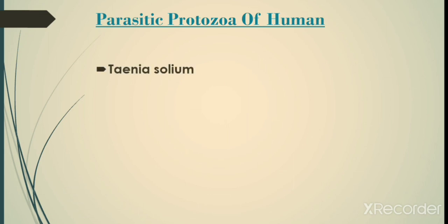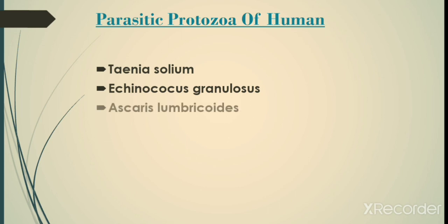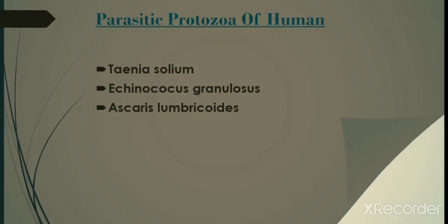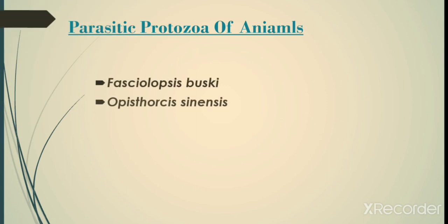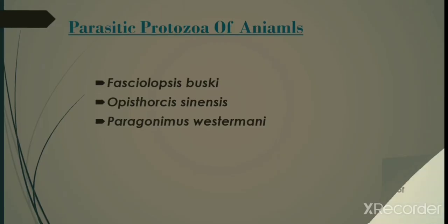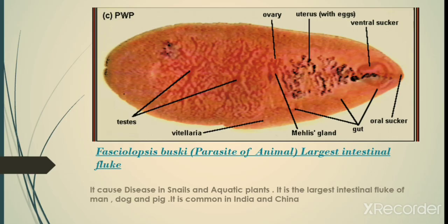The parasitic protozoa of humans which are covered are Taenia solium, Echinococcus granulosus, and Ascaris lumbricoides. The parasitic protozoa of animals which are covered are Fasciolopsis buski, Opisthorchis sinensis, and Paragonimus westermani.